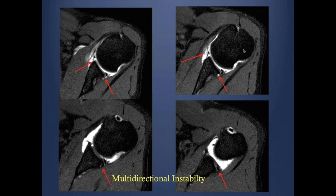In multidirectional instability, an arthrogram shows tears in both the anterior and posterior labrum, which is a typical example of multidirectional instability.